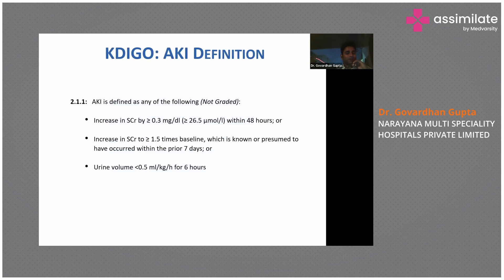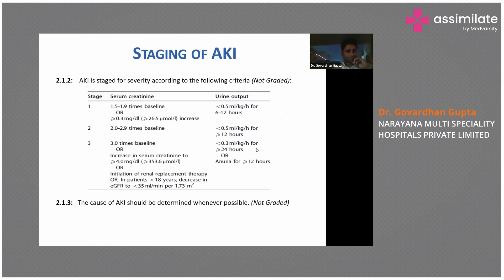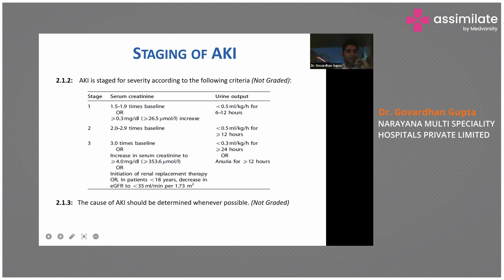In our methodology, we follow KDIGO guidelines, and this is the kind of definition we use. One thing I forgot to tell: the increment of 0.3 mg/dL occurs within 48 hours — that is 2 days — then 50% within 7 days, and the urine output criteria is for 6 hours. That is what we just need to remember.